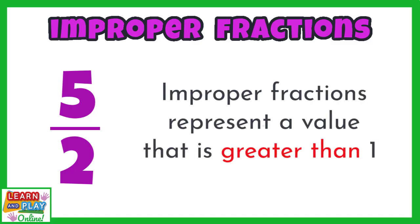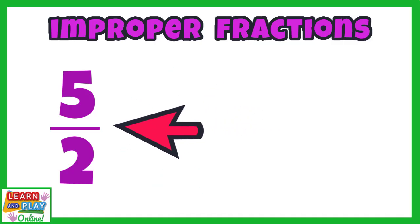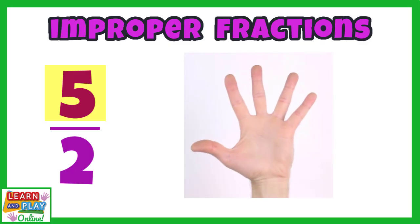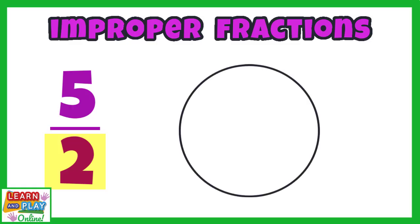Let's create a visual representation for the improper fraction 5 halves. The numerator, 5, tells me that I have 5 equal parts of something. The denominator, 2, tells me that the whole to begin with was divided into halves, meaning there are 2 equal parts that make 1 whole.